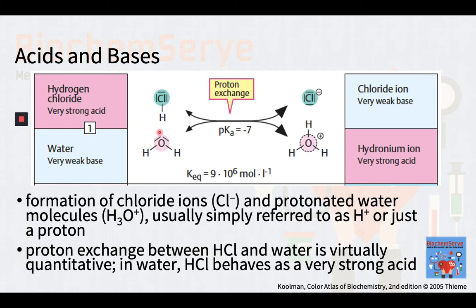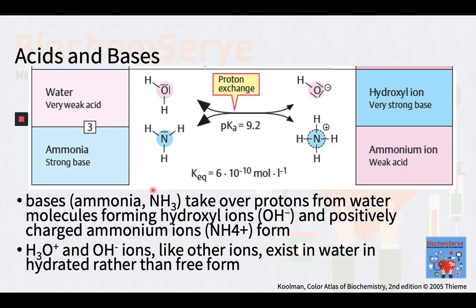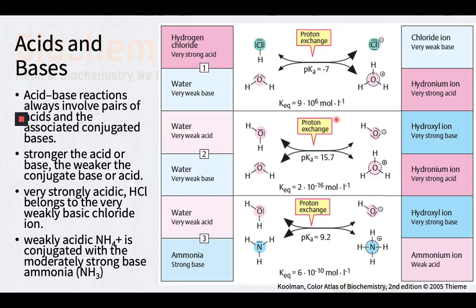The proton exchange between HCl and water is virtually quantitative. In water, hydrochloric acid behaves as a very strong acid. In biological systems, however, we usually deal with weak acids such as carboxylates. Bases such as ammonia NH3 take over protons from water molecules. As a result, hydroxyl ions or OH- and positively charged ammonium ions or NH4+ form. Hydronium and hydroxyl ions, like other ions, exist in water in hydrated rather than free form. Acid-base reactions always involve pairs of acids and the associated conjugated bases. The stronger the acid or base, the weaker the conjugate base or acid respectively.